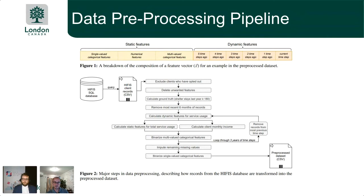Our second iteration used only static features — those client demographic attributes. Version three, our final production model, added the dynamic features. Between the two models, we saw a doubling of precision metrics and a 50% reduction in false positives — critical from a business perspective when false positives carry a significant dollar value and labor cost in providing social service resources.